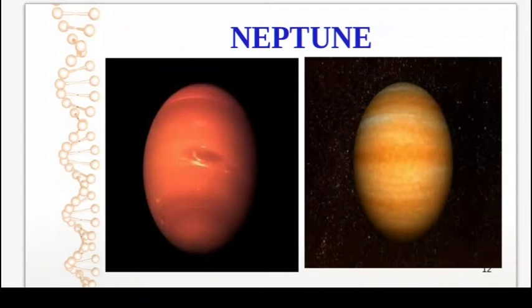Next planet is Neptune. Neptune is the eighth planet of the solar system. Neptune is also very similar to Uranus and it can be considered as its twin. Neptune is also surrounded by methane rings of sub-zero temperature.